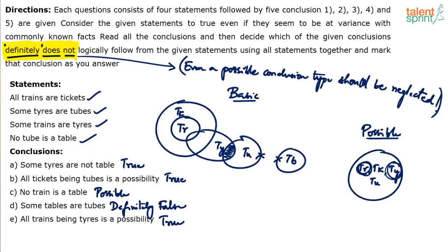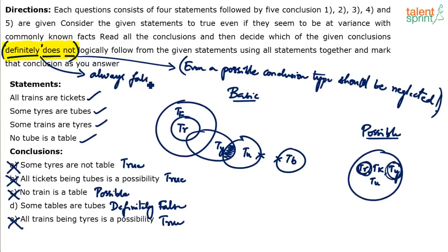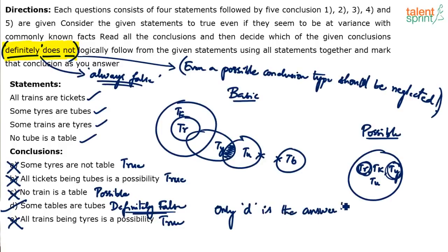Repeating the direction: which of the following conclusions definitely does not follow? Anything which is true is ruled out — conclusions A, B, and E are ruled out. Anything which is possible is also ruled out, because if it is possible we cannot say it definitely does not follow. 'Definitely does not follow' means always false. The only conclusion which is always false is conclusion number 4. So only D is your answer. Same concept — the question is just asked in a different way.